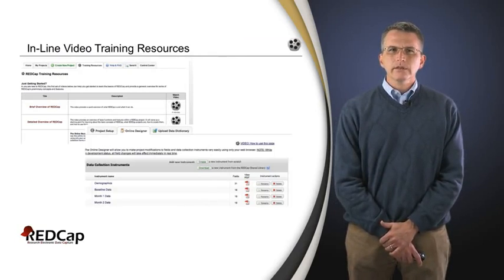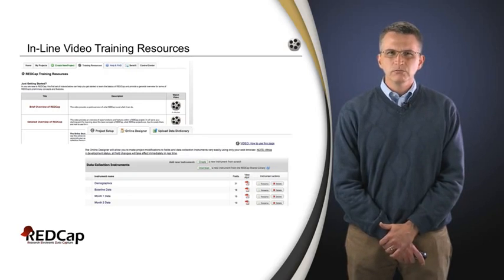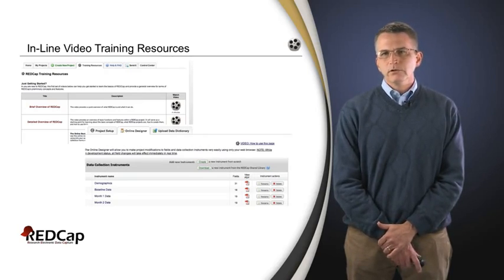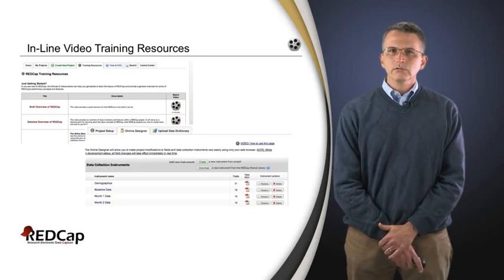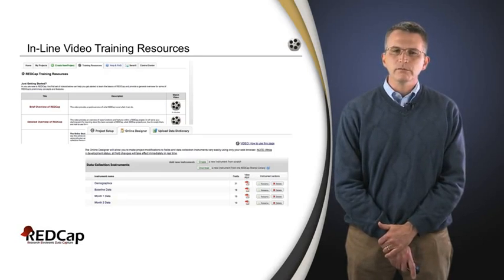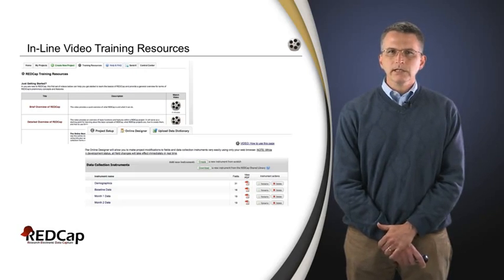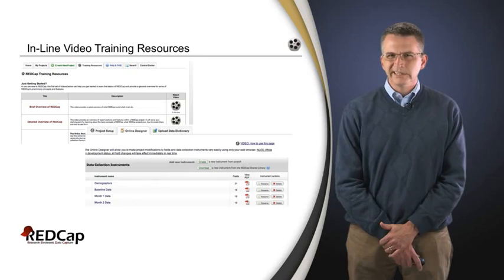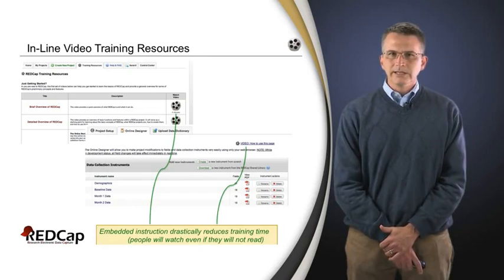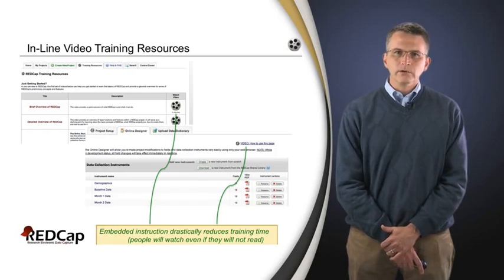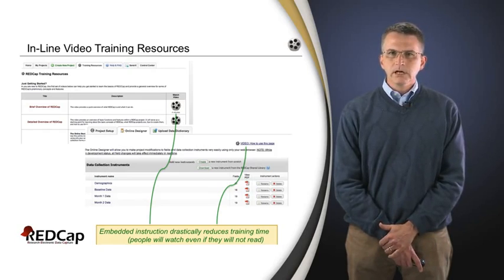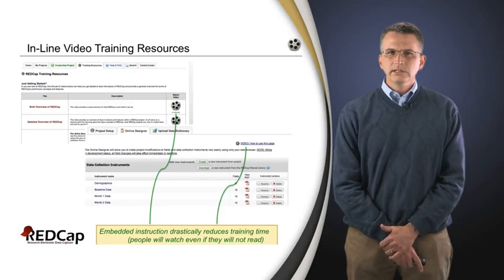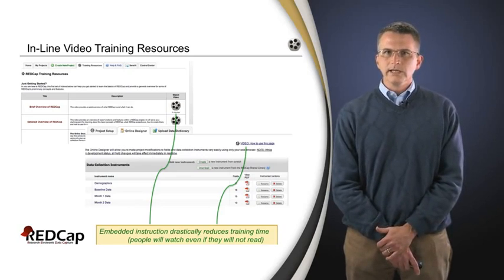In any electronic data capture system, one of the things you want to look for is ease of use, because you really want to reduce the training costs associated with your staff. If you're doing multi-center studies as a coordinating center, you certainly want to reduce staff training time at remote sites. We put a lot of stock in putting power in the hands of research teams and including inline video documentation within the platform. We've found that people will typically watch a two-minute video where they will not take the time to download a two-page Word document or PDF manual. Embedding those videos just in time — right at the point where you might be wondering about something — means people will watch them and there will be fewer questions downstream.